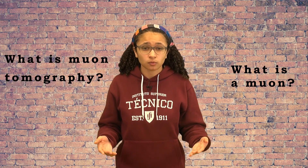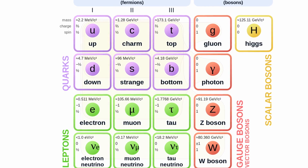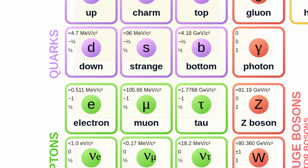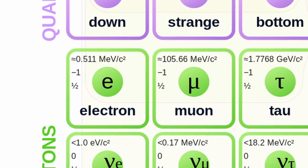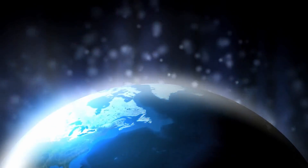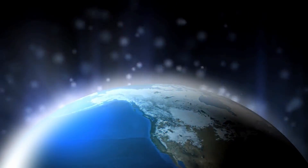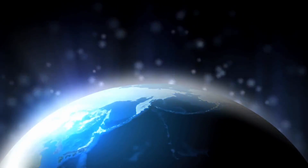What is a muon? A muon is an elementary particle, quite similar to an electron. However, it's heavier, with a mass around 200 times bigger. Because of this, contrary to electrons, muons can travel through matter without changing direction, in a straight line. These particles are constantly being created when cosmic rays reach the atmosphere and interact with it. The muons are called MIP, Minimum Ionizing Particles, which means while propagating they lose energy slowly.